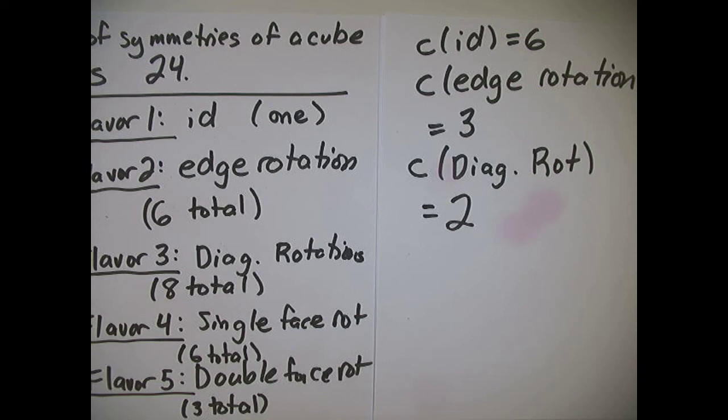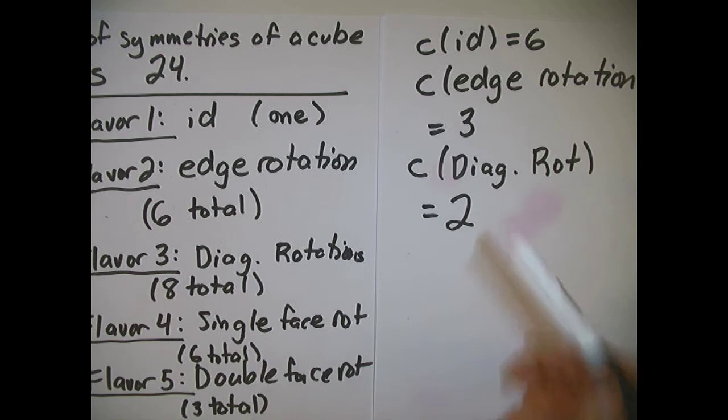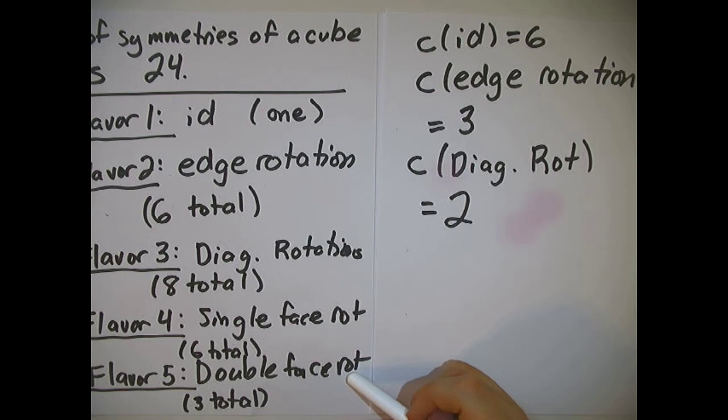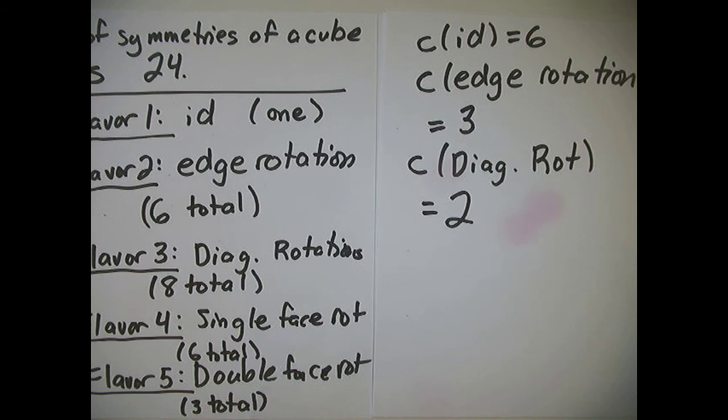There are two more to go. Before I do them, I'll pause the video. I encourage you to figure out what the cycle number is for a single face rotation and what the cycle number is for a double face rotation — they are different. When we come back, I'll have done those, and then we'll count the number of ways to color our cube.